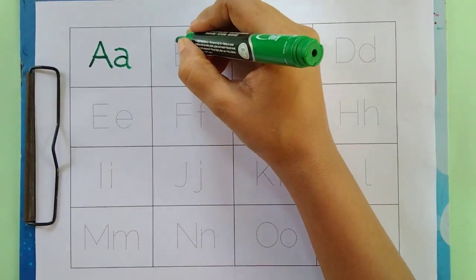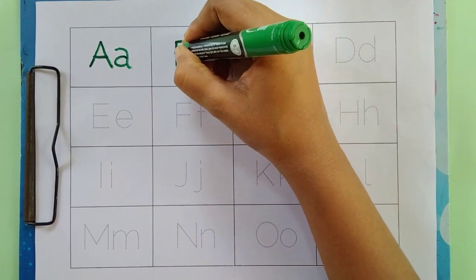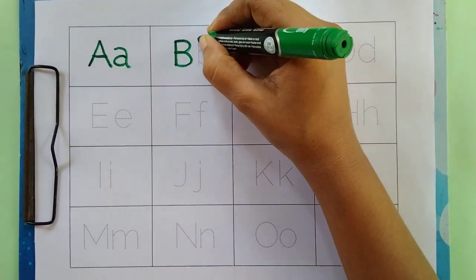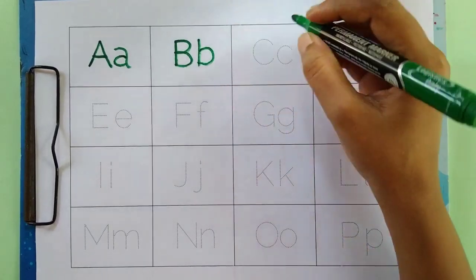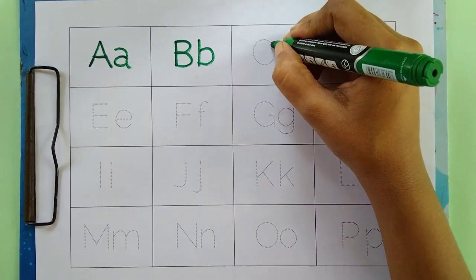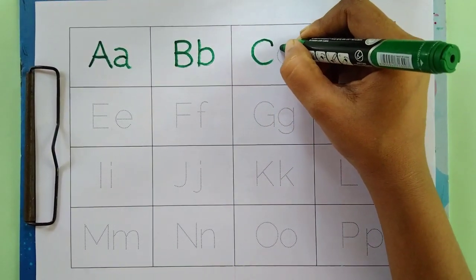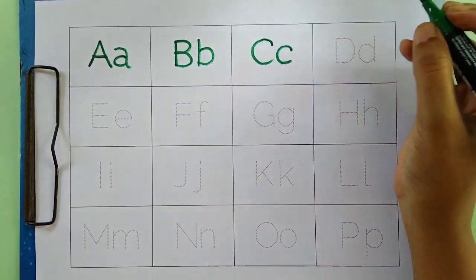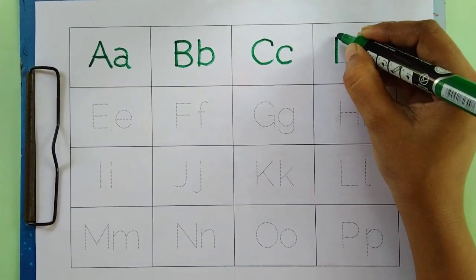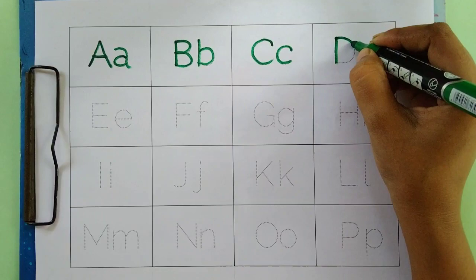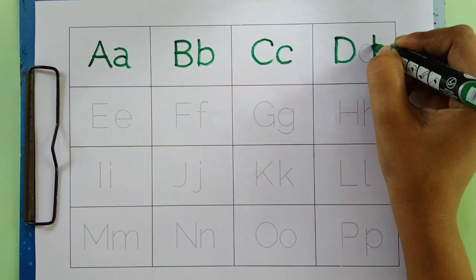B, B for ball, B for ball. C, C for cat, C for cat. D, D for dog, D for dog.